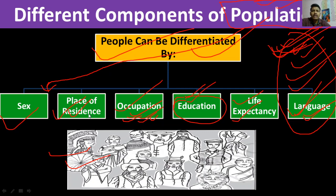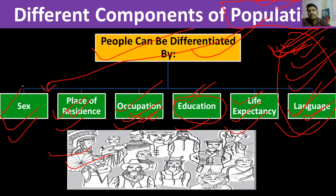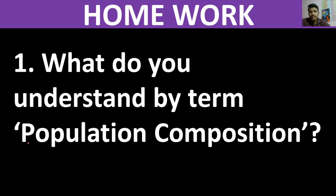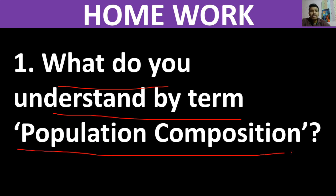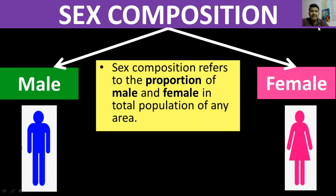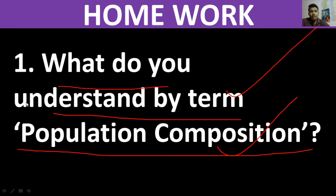So, to summarize: you should now understand the components of population composition. In this chapter, we basically study the population based on components like sex, place of residence, and other attributes. We will study the characteristics of the different components. In this video, we have introduced the concept of population composition. The next part — the first major topic — will be the sex component of population. We will start that study next. Thank you.